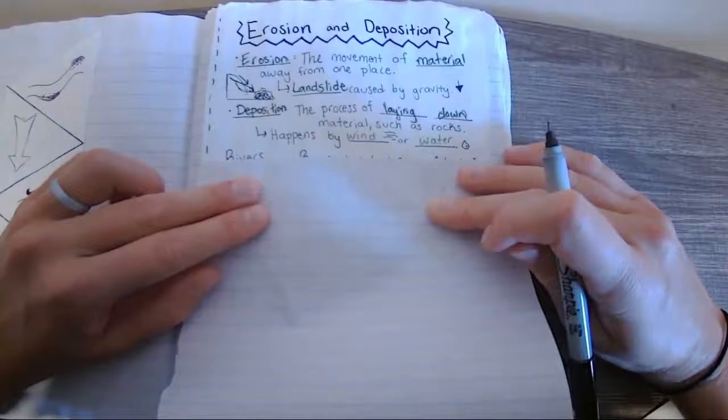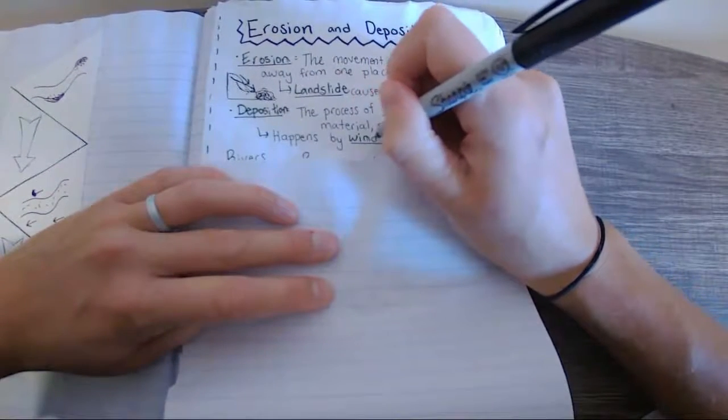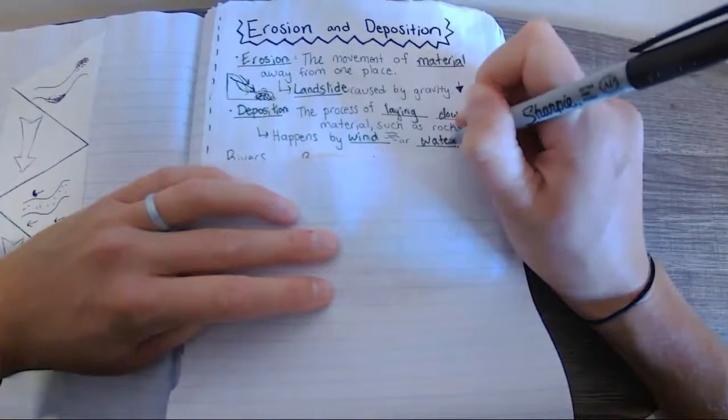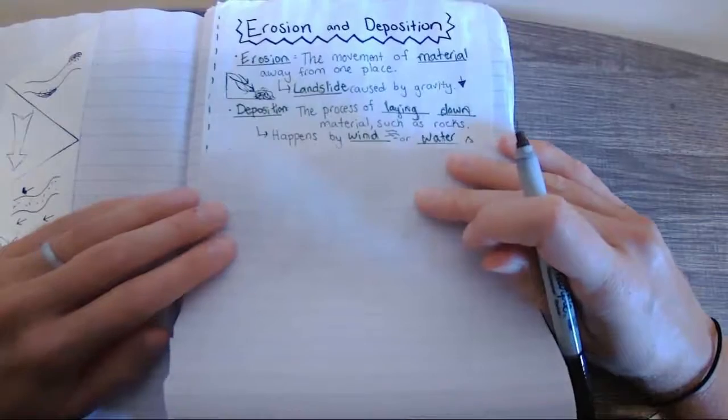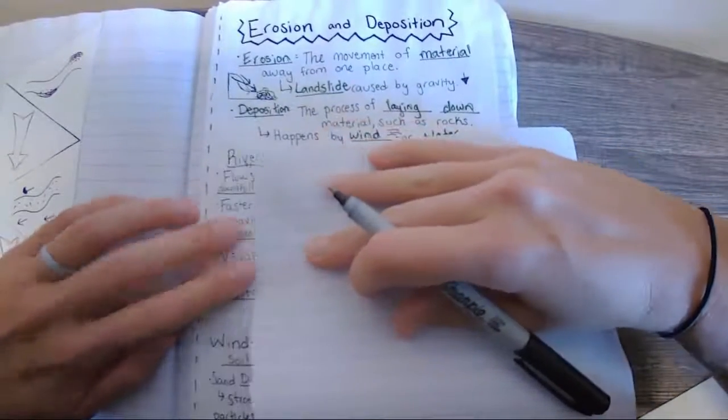Now, this can happen by wind or water. I'll try and give you little hints with the pictures in your guided notes. Wind and water. Now, there are several different columns here, and we're going to start over on the left side with rivers.